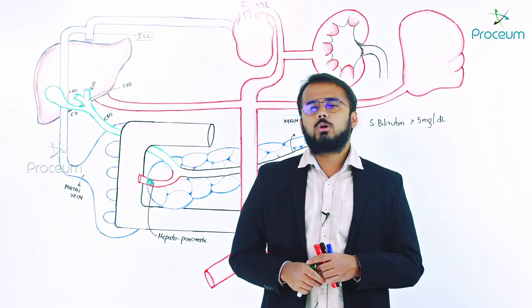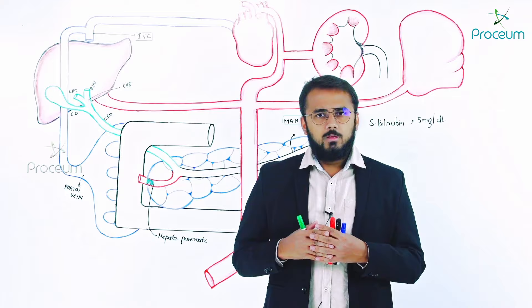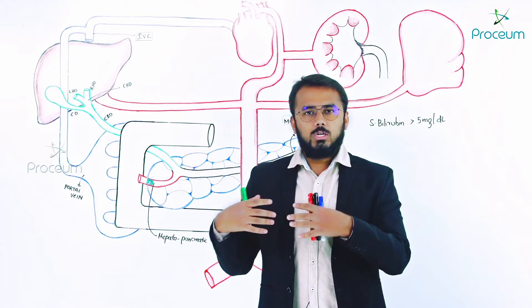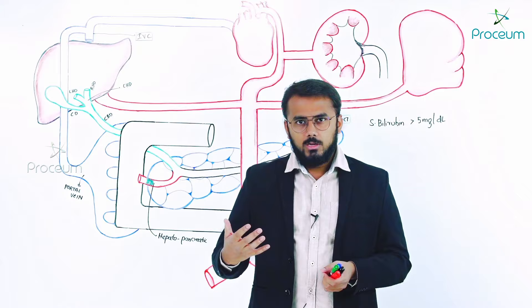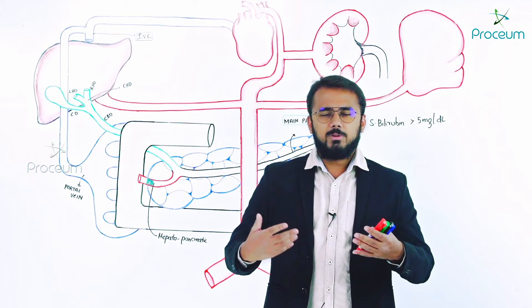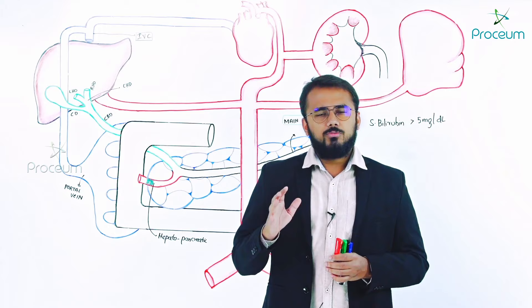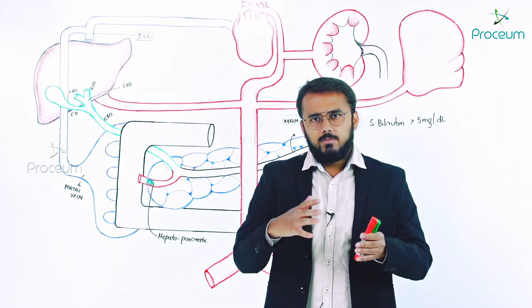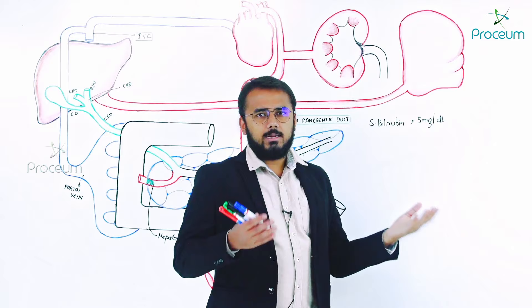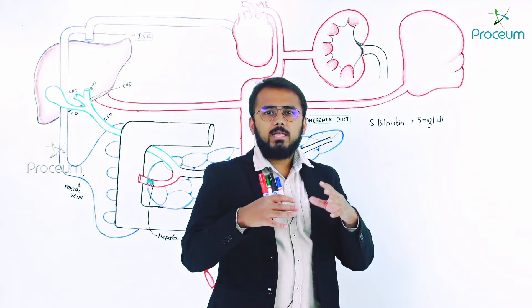Regarding bilirubin excretion, there are terms like conjugated bilirubin and unconjugated bilirubin. The normal lifespan of an RBC is about 120 days. After 120 days, RBCs go to the spleen and get ruptured and die there.